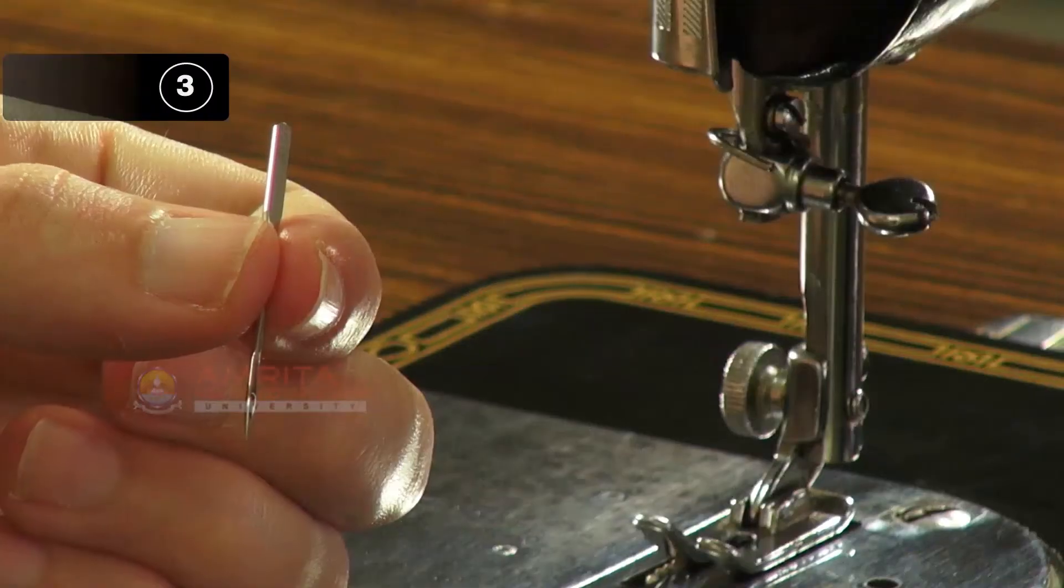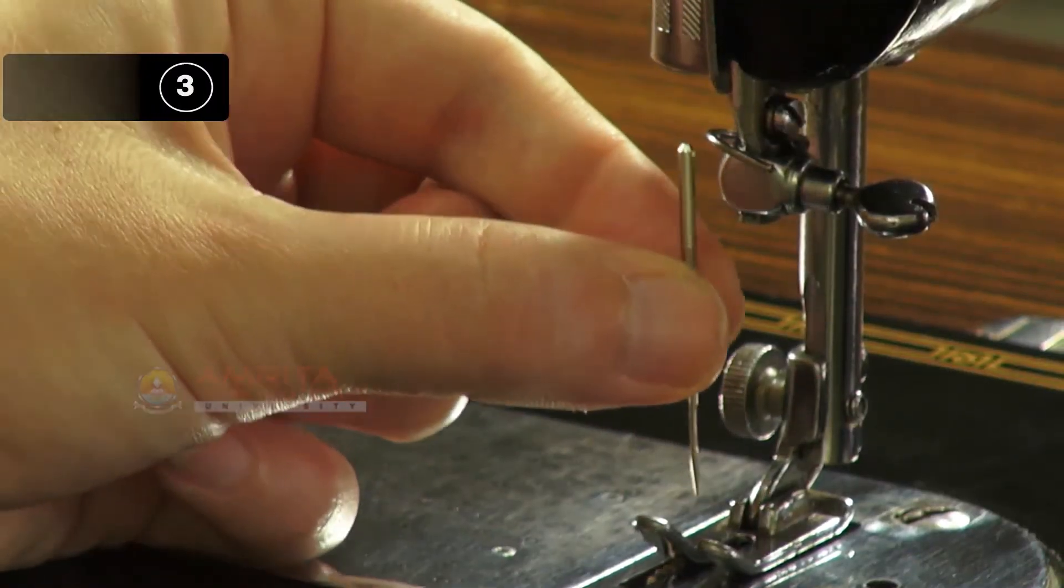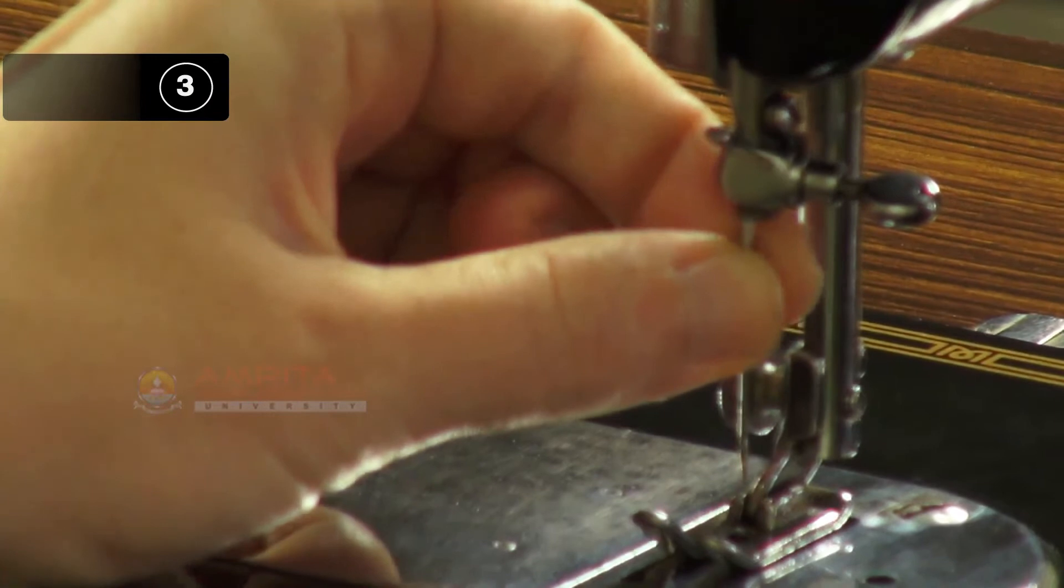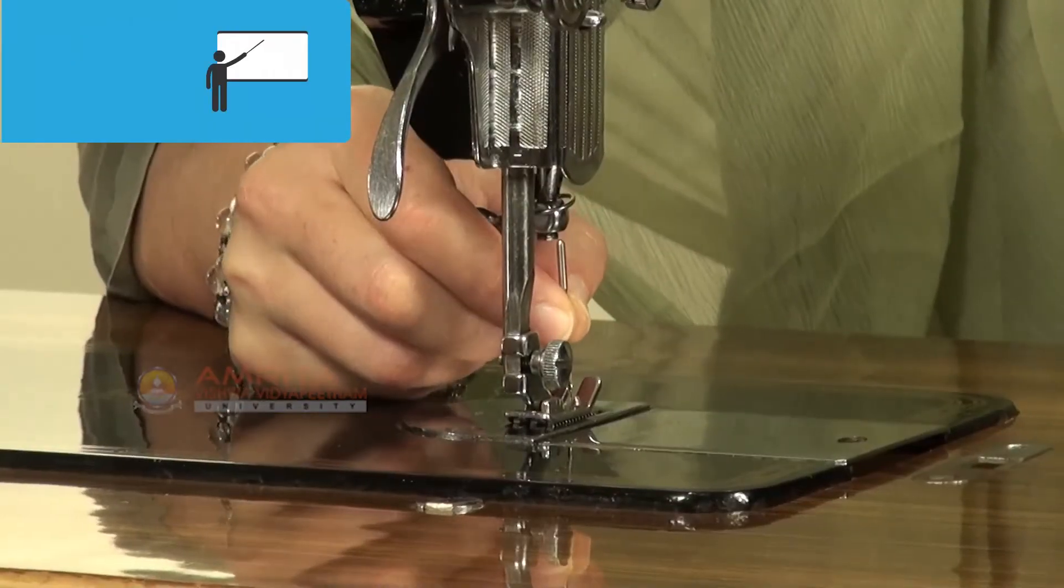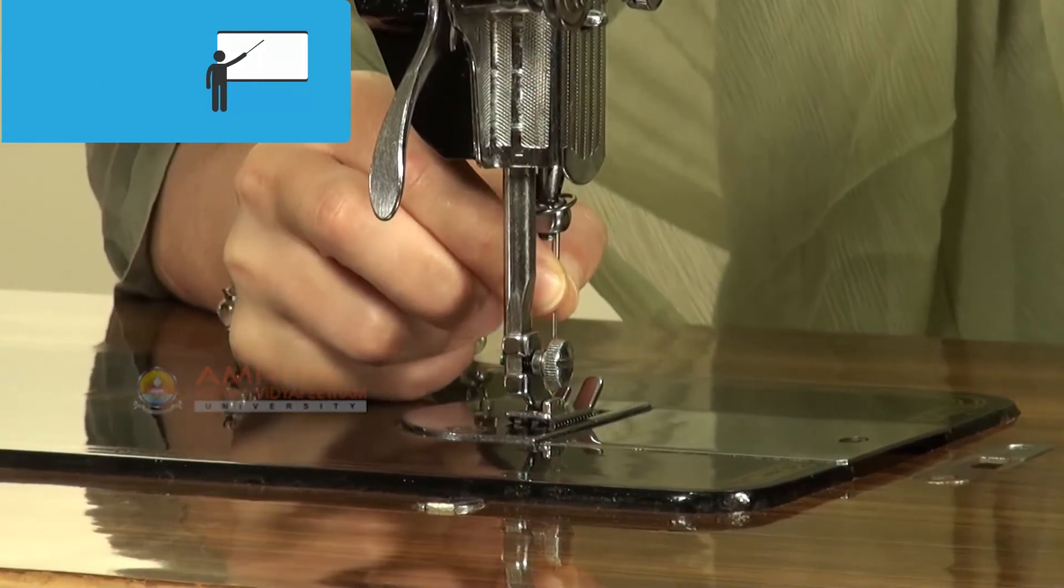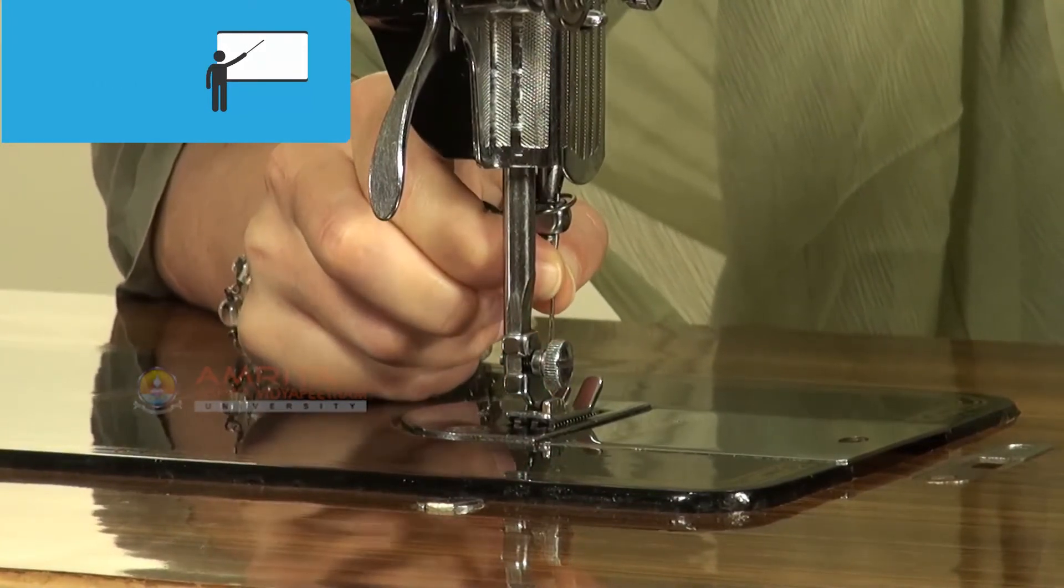Step 3: Put the needle up into clamp as far as possible. Failing to push the needle all the way up will definitely cause the needle to break.